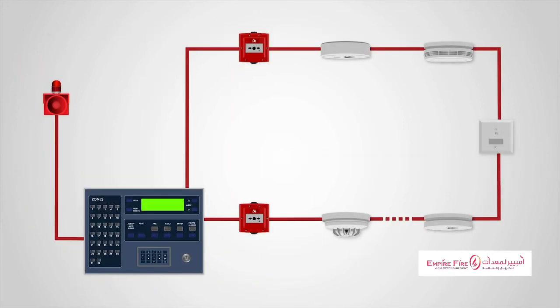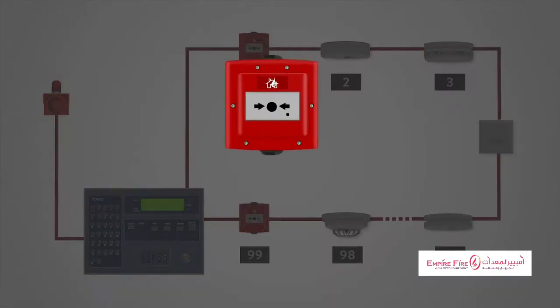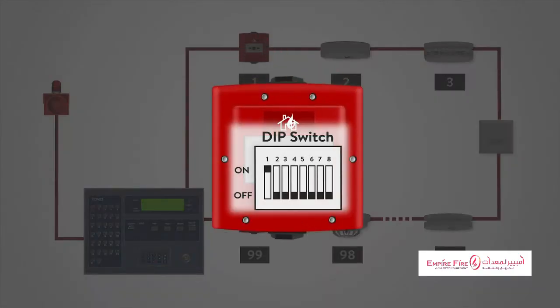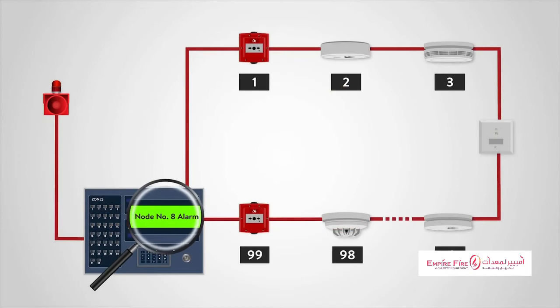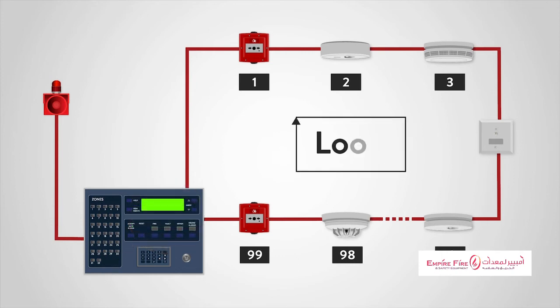The detection principle of an addressable system is the same as a conventional system, except that each detector is given a set address, usually by means of a DIP switch, and the control panel can then determine exactly which detector or call point has initiated the alarm. The detection circuit is wired as a loop, and up to 99 devices may be connected to each loop.